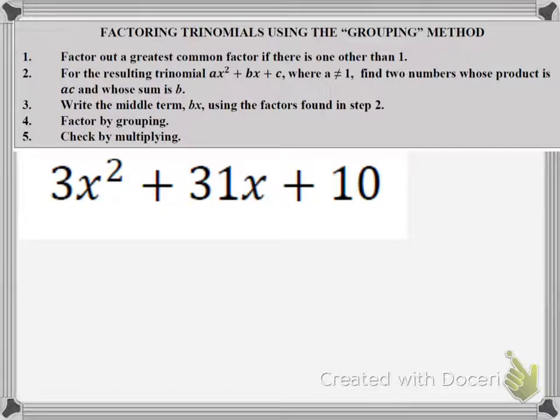So let's look at our first step. It says we factor out a GCF if we have one. Well, when I look at this problem, my coefficients are 3, 31, and 10. Those numbers do not have any factors in common, so I can be done with step 1.